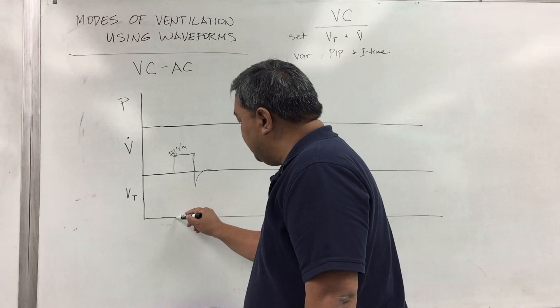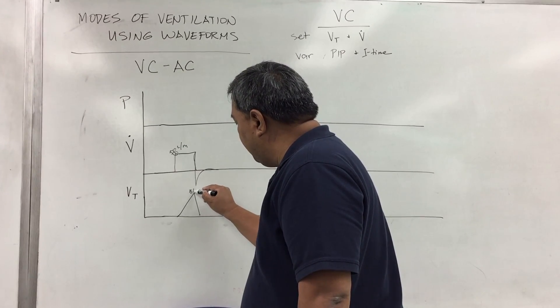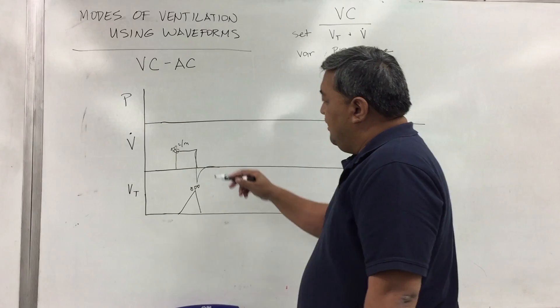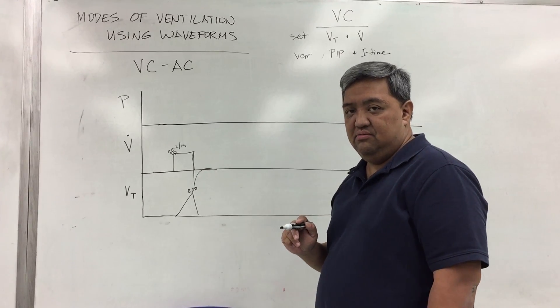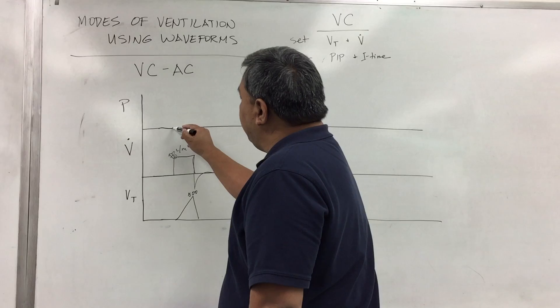You will also have a set tidal volume. So let's pretend this is 500 mLs. Based on this 50 liters per minute, it is delivering 500 mLs of tidal volume at a given pressure.